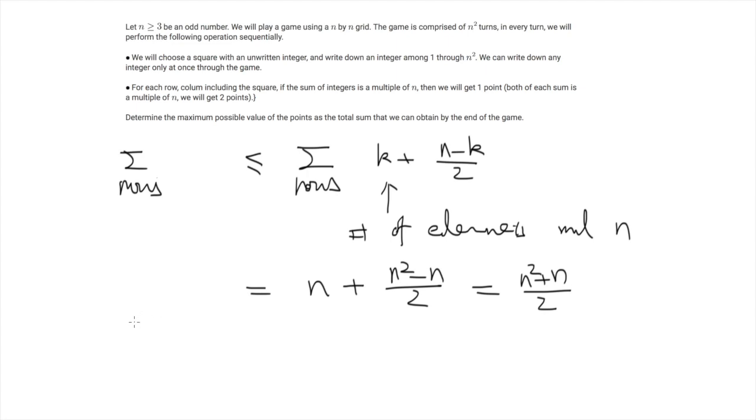And we can do the same thing on each column. And so the sum we get from the columns is also upper bounded by n squared plus n over 2. And this means that the total points is upper bounded by n squared plus n.